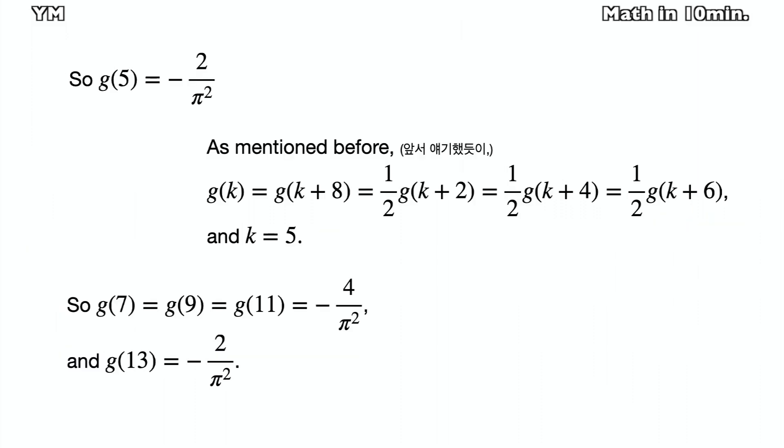We already know that g7, g9, and g11 are twice of g5, and g13 is equal to g5. So we can get these.